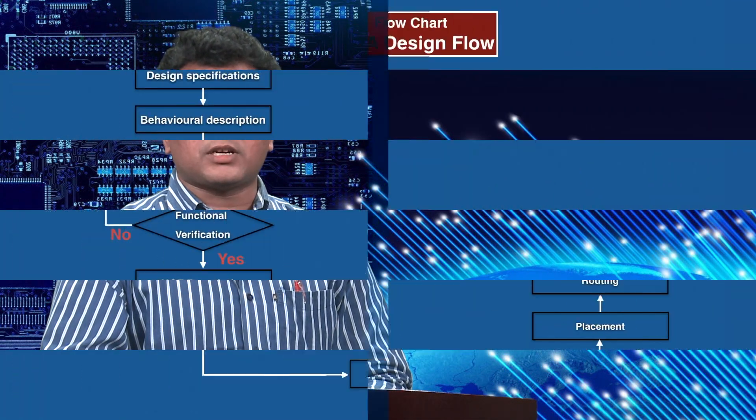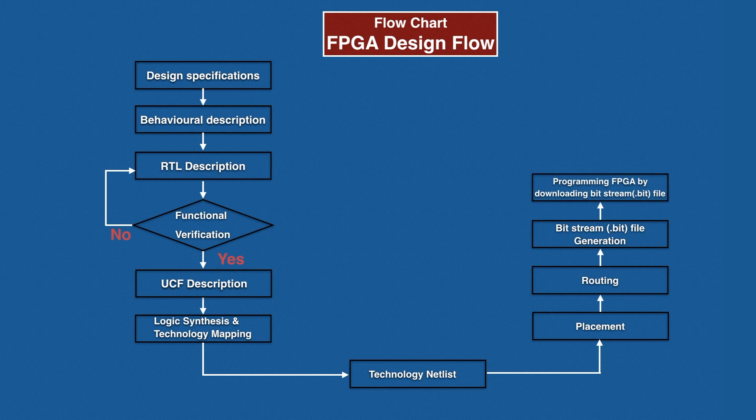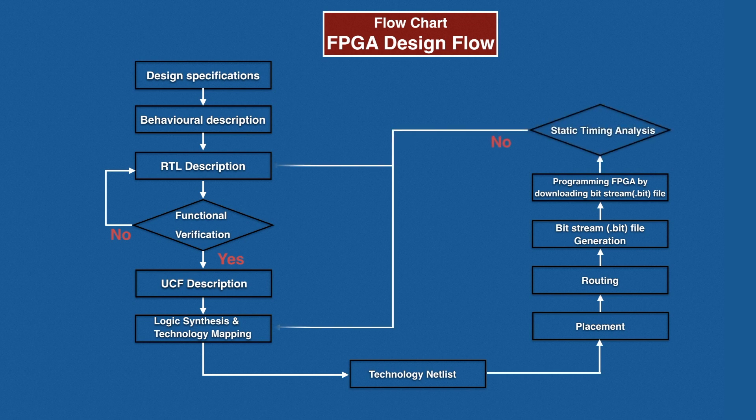The eleventh stage in the flow chart of FPGA design flow is programming the FPGA by downloading the bitstream file created in the tenth stage. The twelfth stage is static timing analysis. In this stage, the timing characteristics and design specifications of the design are verified with the help of real-time test vectors. After timing verification, the design proceeds to prototype development if it meets required specifications; otherwise, the design is reprocessed to meet the design specifications.